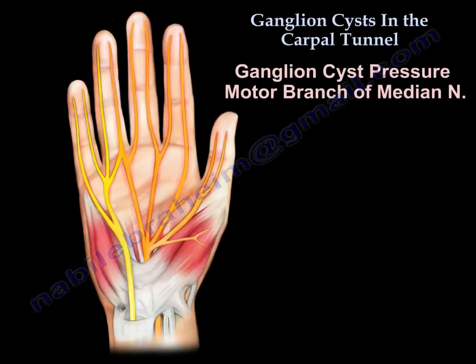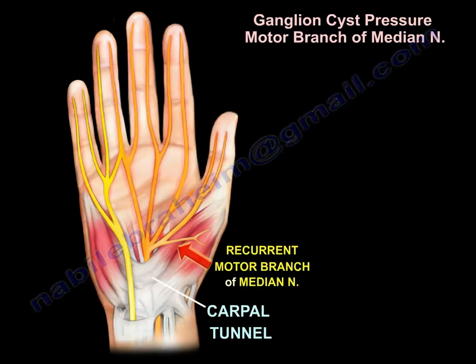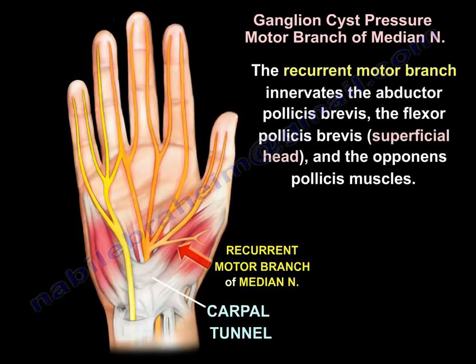Ganglion cysts and pressure on the motor branch of the median nerve. After passing through the carpal tunnel, the median nerve gives a branch on the radial side called the recurrent motor branch. This recurrent motor branch innervates the abductor pollicis brevis, the flexor pollicis brevis superficial head, and the opponens pollicis muscle.